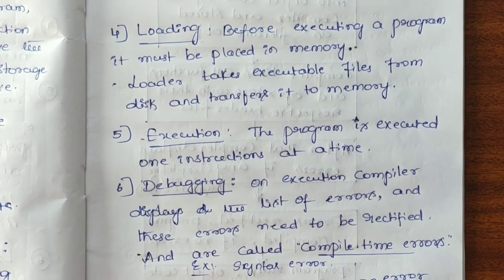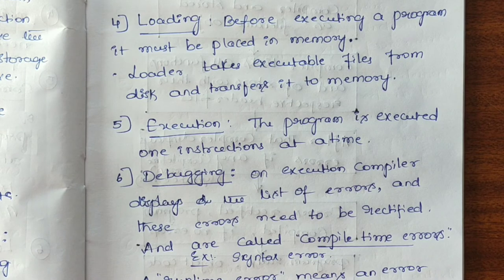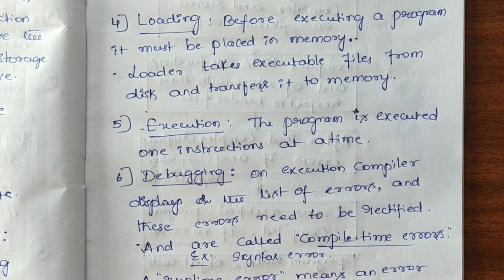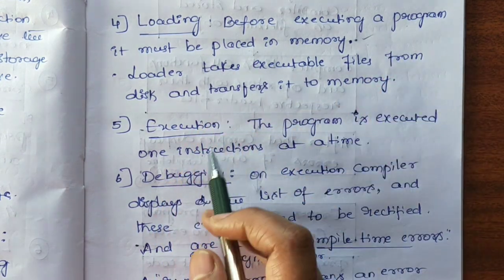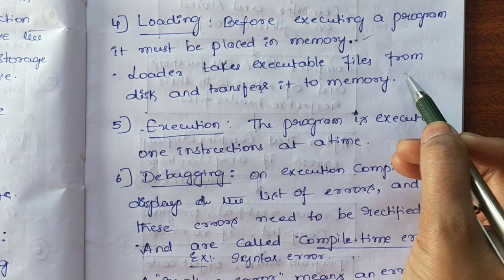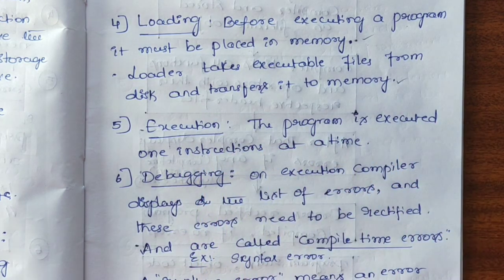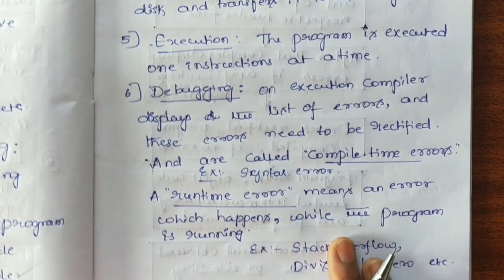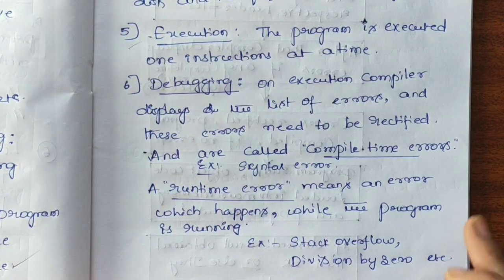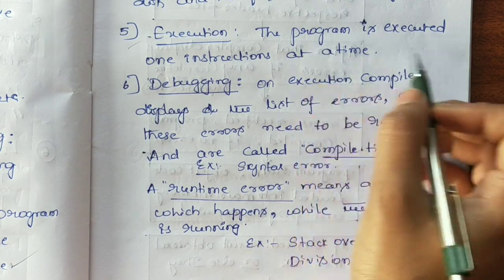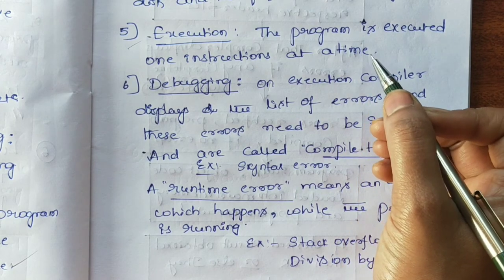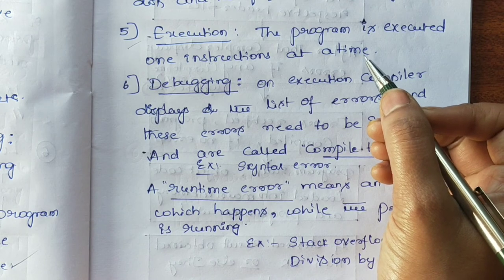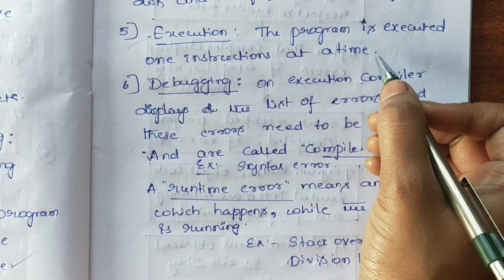The next step is loading. Before executing a program, it must be placed in memory. The loader takes the executable file from disk and transfers it to memory. After loading, execution is the next step. In the execution part, the program is executed one instruction at a time — if a program contains 10 lines, all 10 lines will not execute at once; one by one each line is executed.